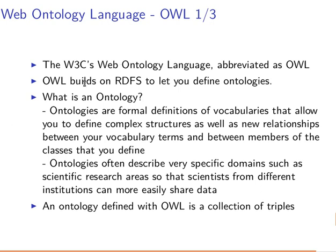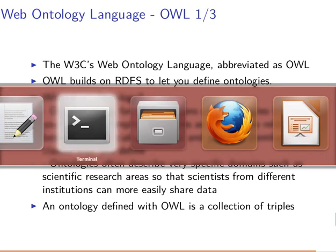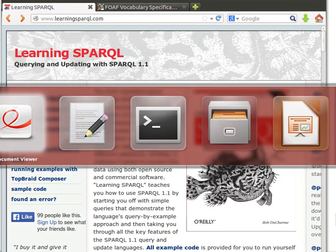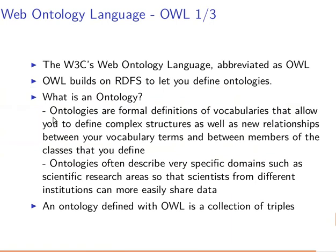OWL actually builds on RDFS to let us define our own ontologies, on top of what we learned before. A good question is: what is an ontology? The author of our book gives us a nice definition — ontologies are formal definitions of vocabularies that allow you to define complex structures as well as new relationships between your vocabulary terms and between members of the classes that you define.